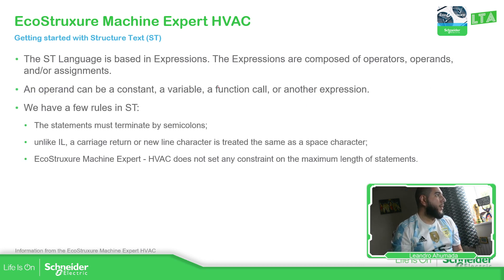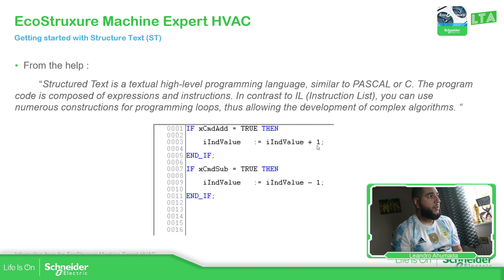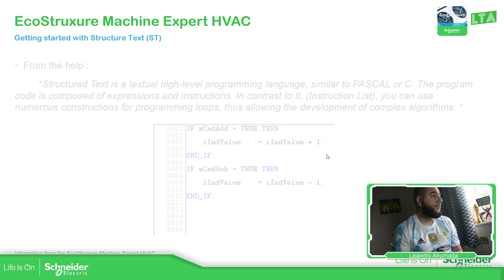The operand can be a constant — you can see here is number one, the constant. In this case, number one. Or it can be a variable, as I'm using here.